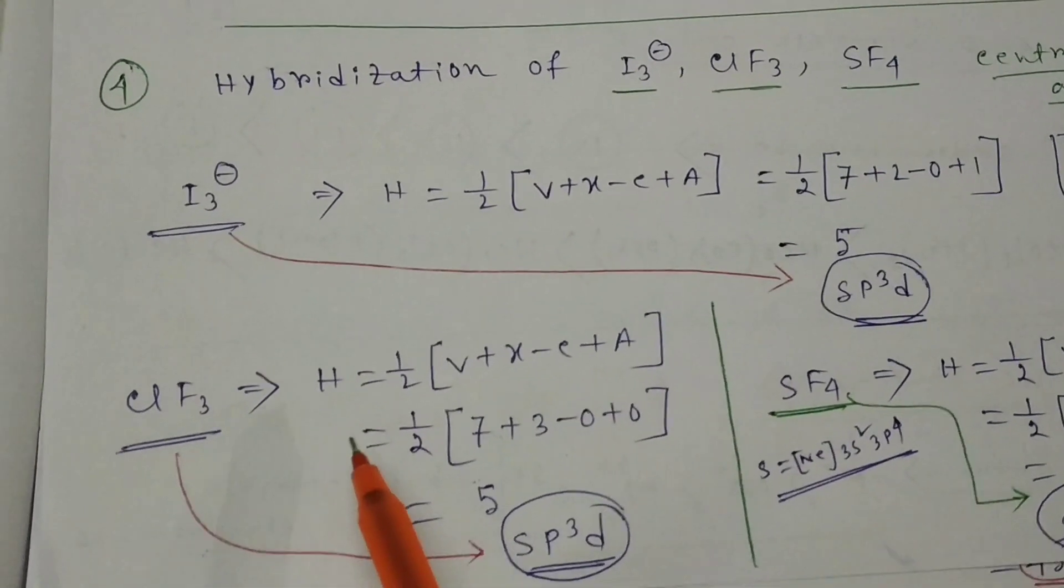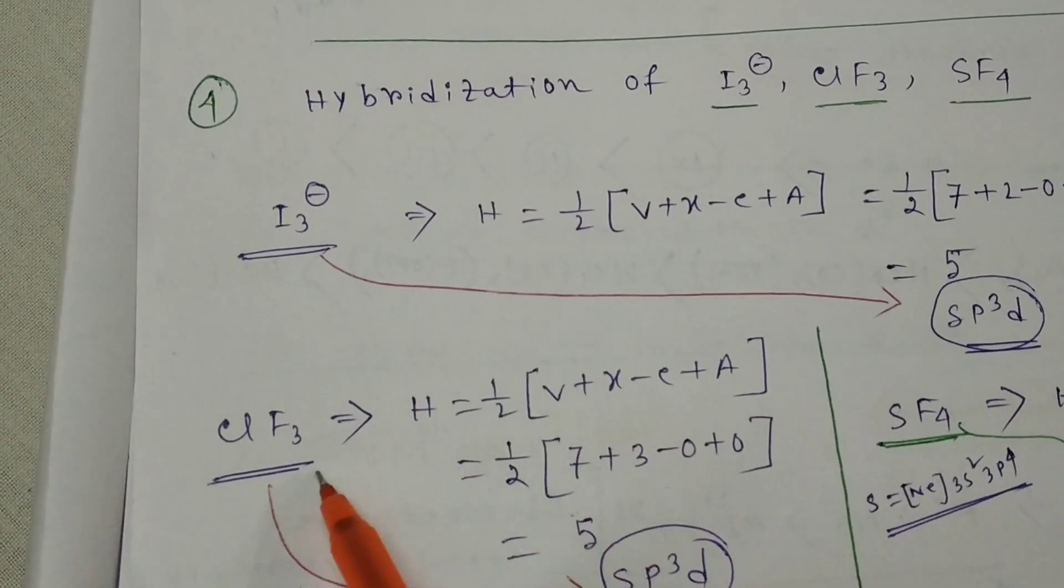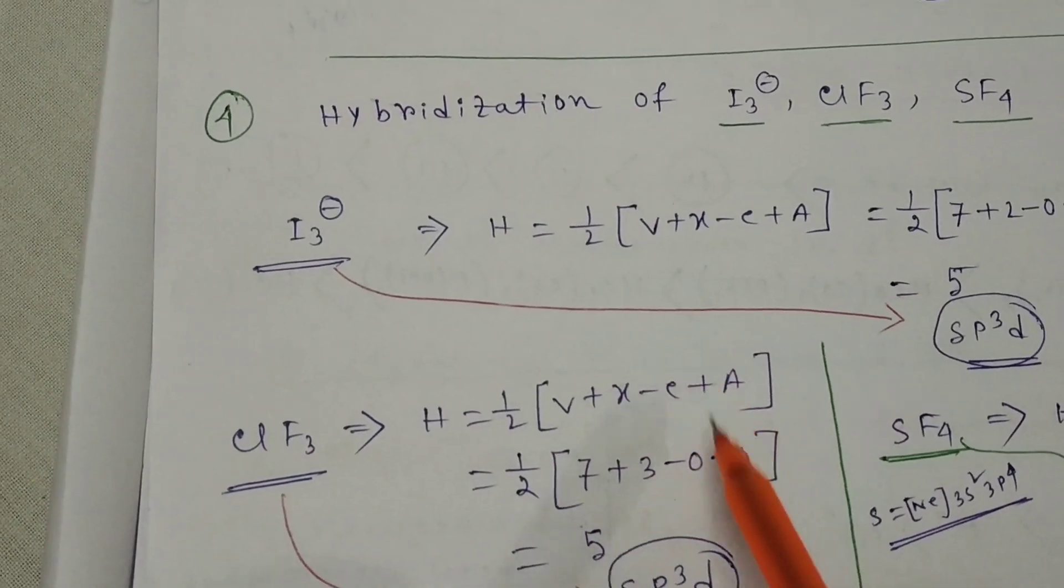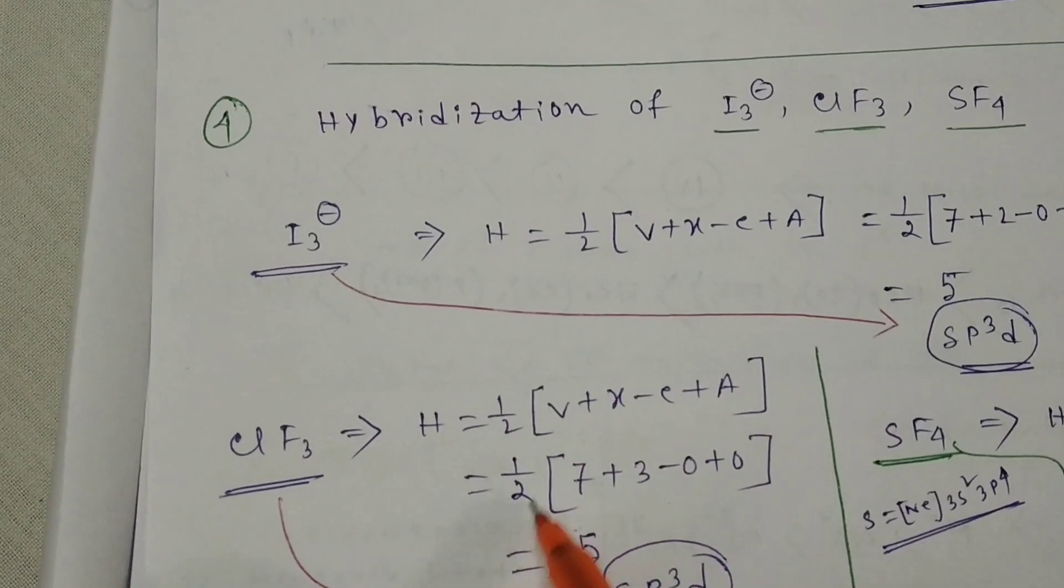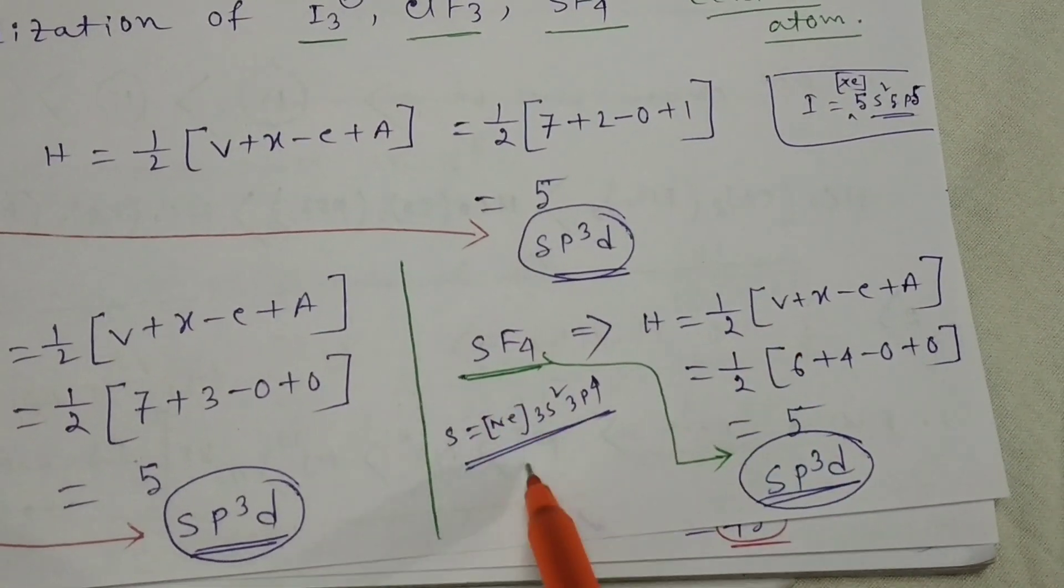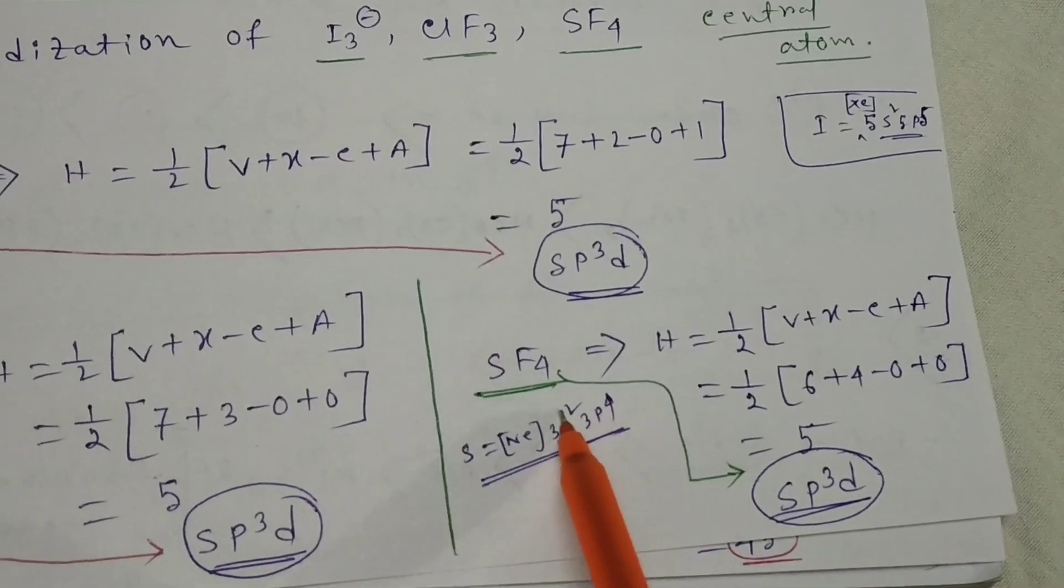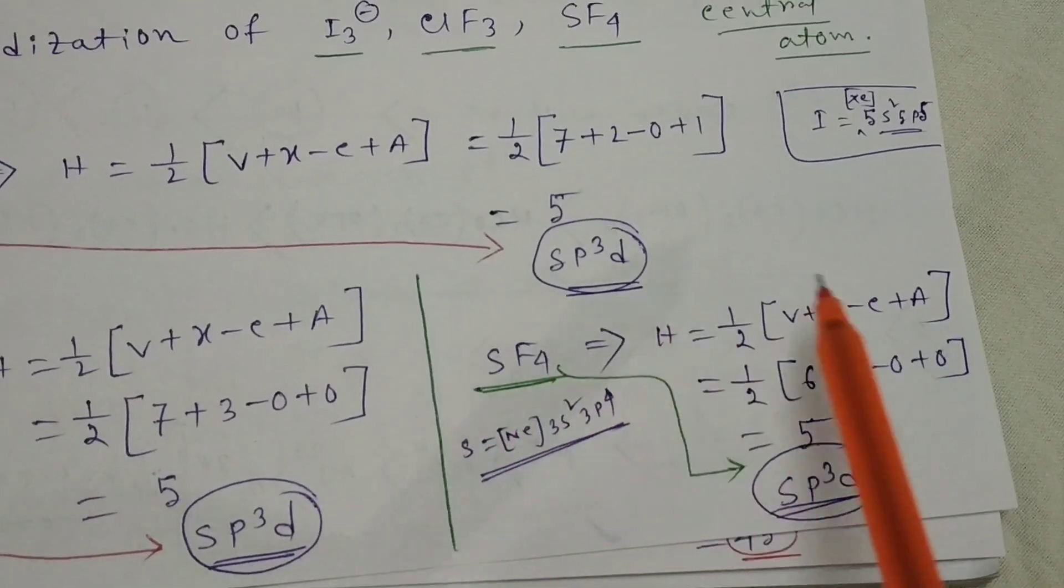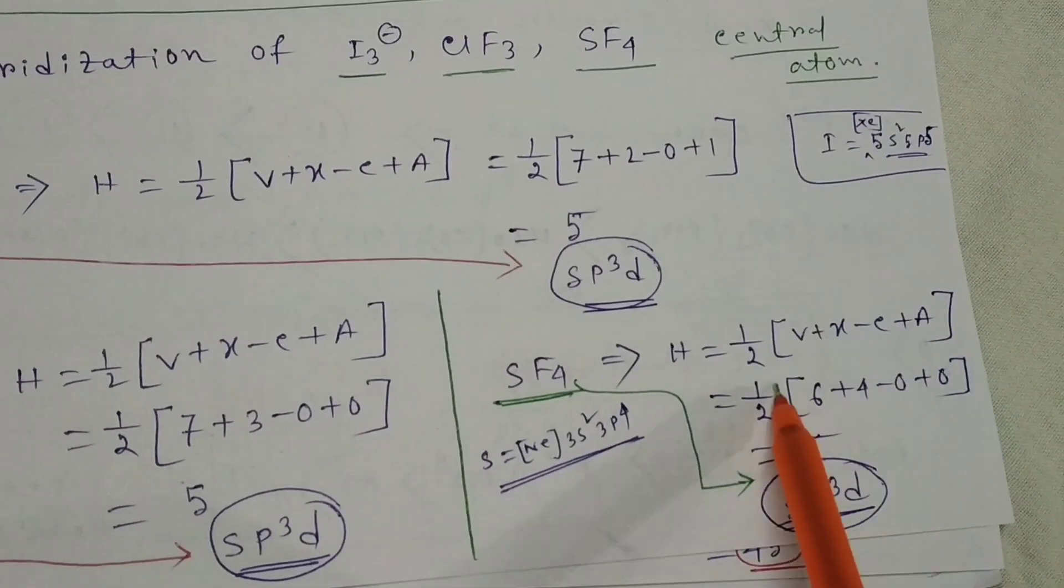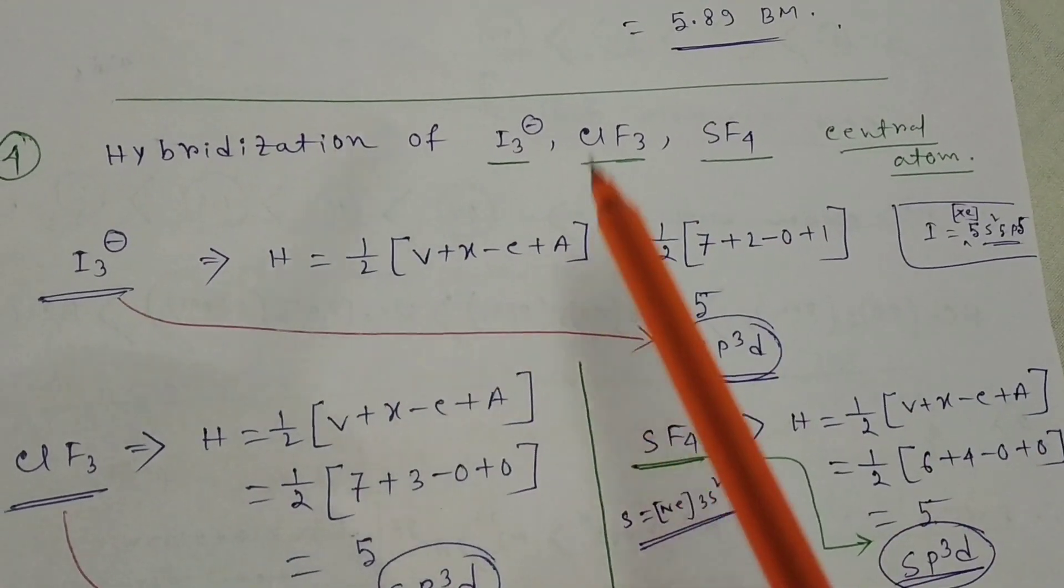Similarly for ClF3, central atom is chlorine, V is 7, X is 3 fluorines, no cation or anion. 10 divided by 2 equals 5, so also sp3d. For SF4, V equals 6 (3s2 3p4), F is halogen, 4 halogens present. 6 plus 4 equals 10 divided by 2, that is 5, sp3d. So all have same hybridization sp3d.